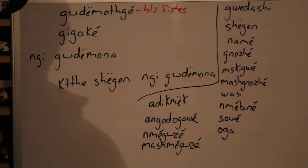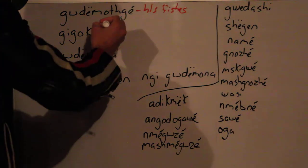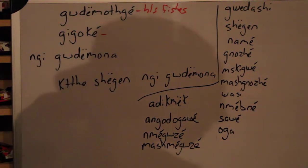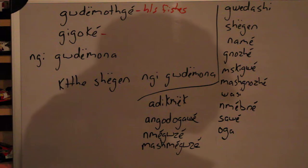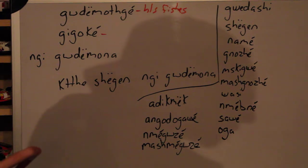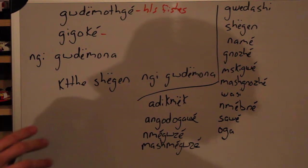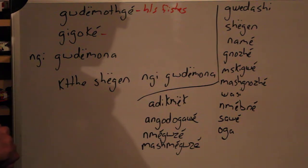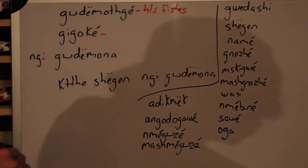The next one we have is goudemojgé. Goudemojgé can mean a few different things. Goudemojgé is used for he or she spearfishes, or any type of fishing that's unspecific. It also refers to he or she processing a fish.